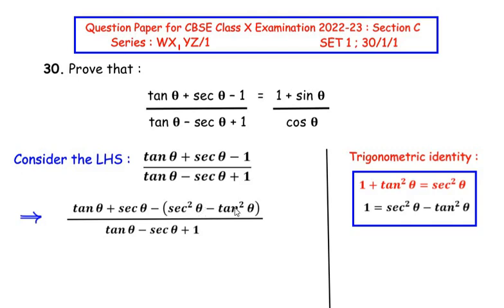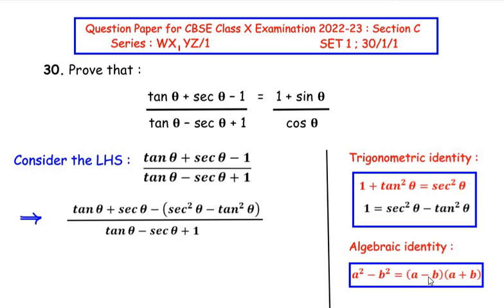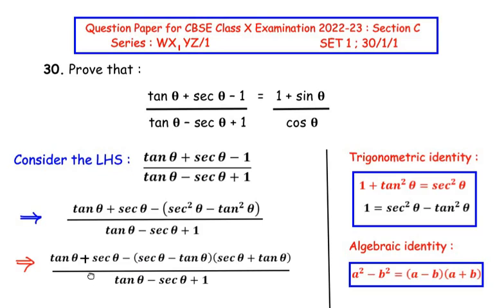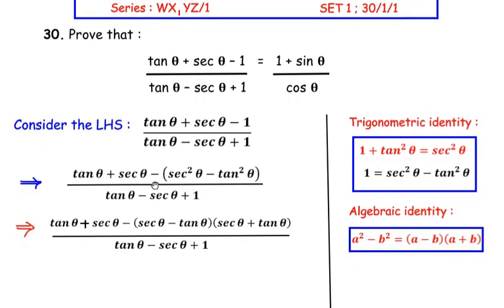Now sec² θ − tan² θ follows the algebraic identity a² − b² = (a − b)(a + b). So sec² θ − tan² θ can be written as (sec θ − tan θ)(sec θ + tan θ). We write the numerator as tan θ + sec θ minus (sec θ − tan θ)(sec θ + tan θ).